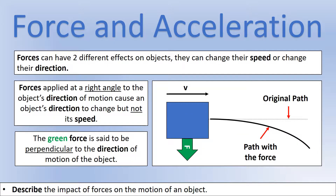If the force is applied at a right angle to the motion of the object, as we can see in the diagram, that causes the direction to change but not the speed. The green force is perpendicular to the direction of motion — 90 degrees to the direction of motion. The dotted line shows the path it would take if there was no force, and we can see that the path bends because of the force acting there.